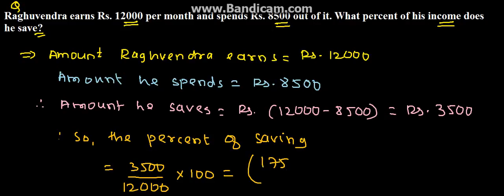So 175 upon 6 percent is the solution for the given problem. He saves 175 by 6 percent of his income. Thank you.